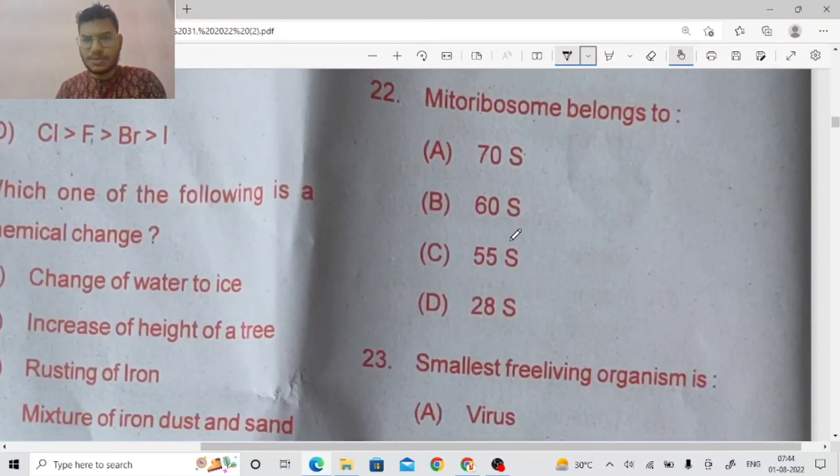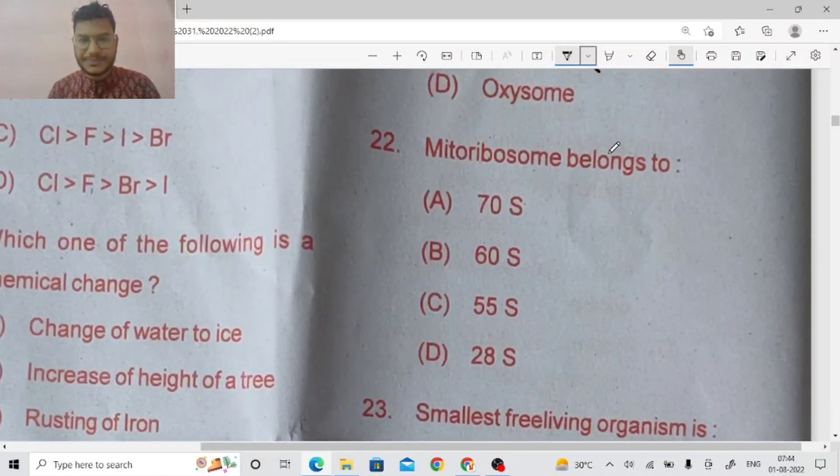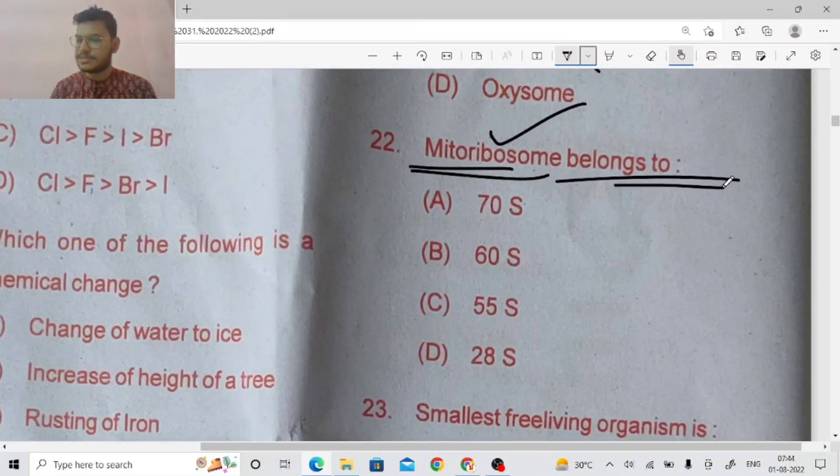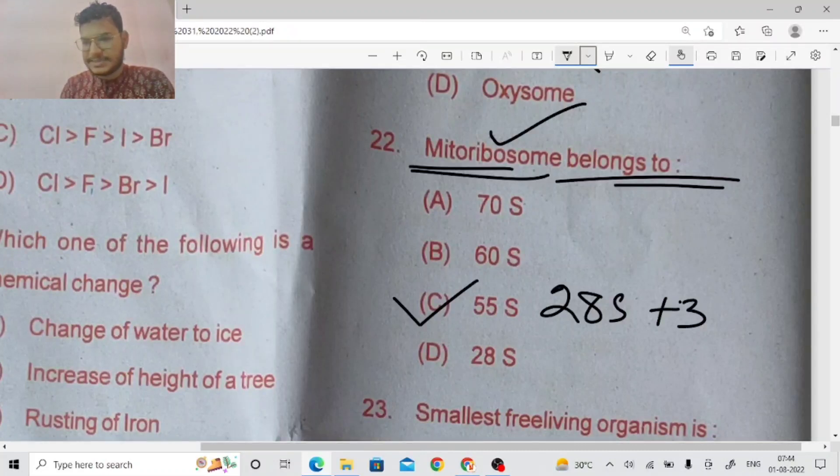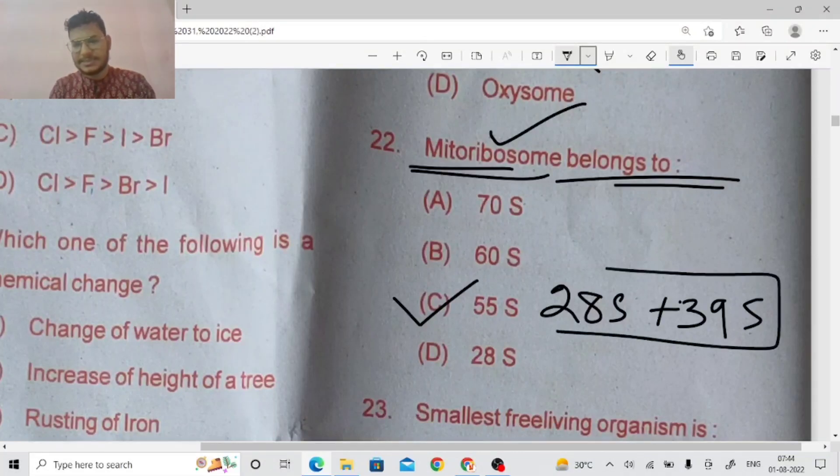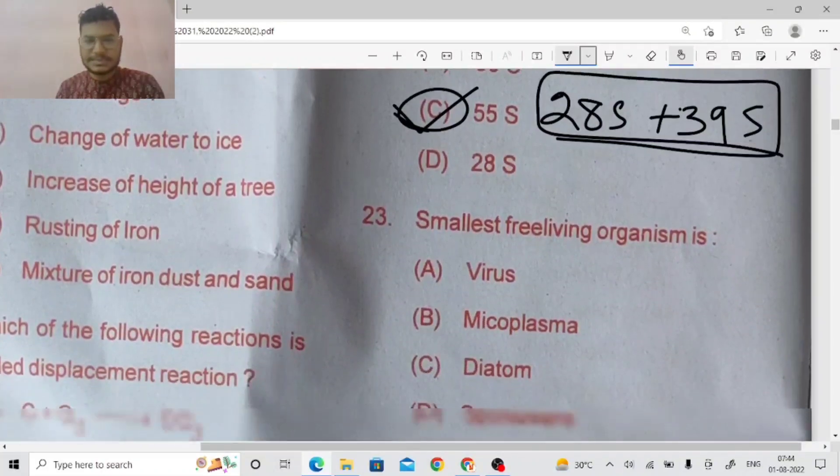Question number 22. Mitoribosomes. Mitochondrial ribosomes belongs to which category? So here the right answer will be C, 55S. It means there are 2 subunits, 28S plus 39S. So right answer is C.